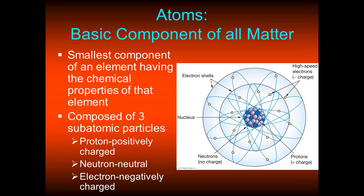Atoms are composed of subatomic particles. There are three kinds: protons, which are positively charged; electrons, which are negatively charged; and neutrons, which have no charge — they're neutral. The center region of an atom is called the nucleus, which contains the neutrons and protons. This is where most of the mass of an atom resides. Everything outside of the nucleus is empty space.